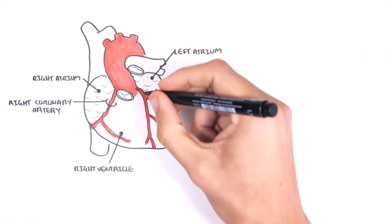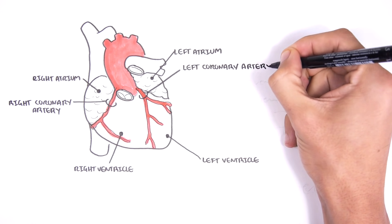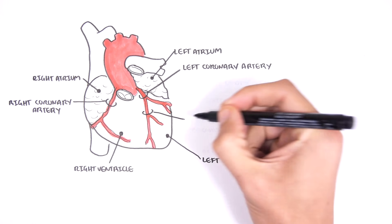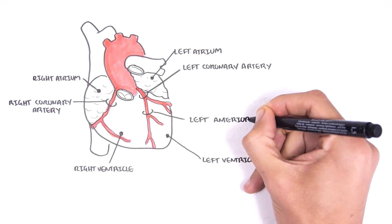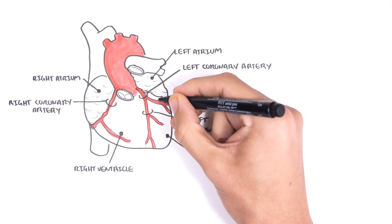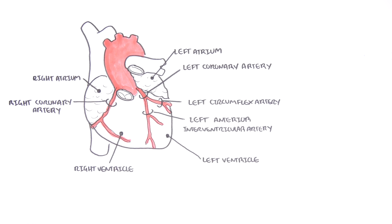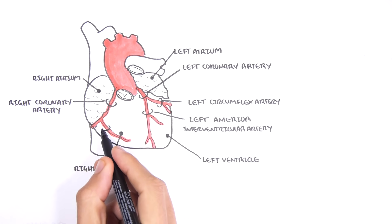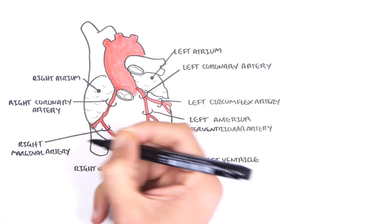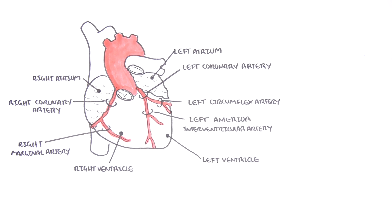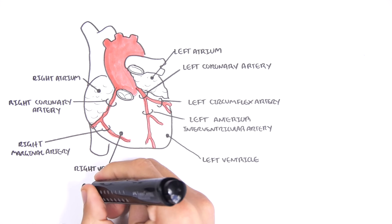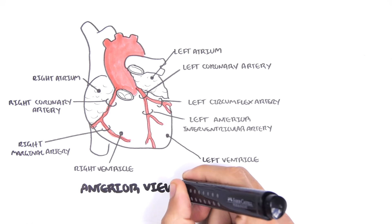The left coronary artery further has two other big main branches called the left anterior interventricular artery, also known as the left anterior descending artery, and then the left circumflex artery. The right coronary artery in the front gives off a branch called the right marginal artery. This is the anterior view of the heart.